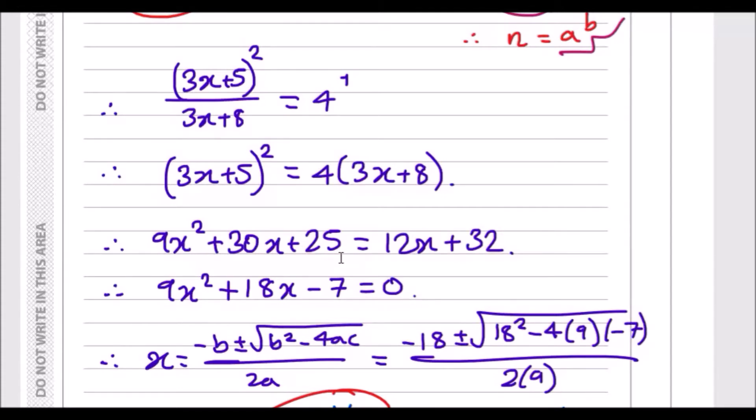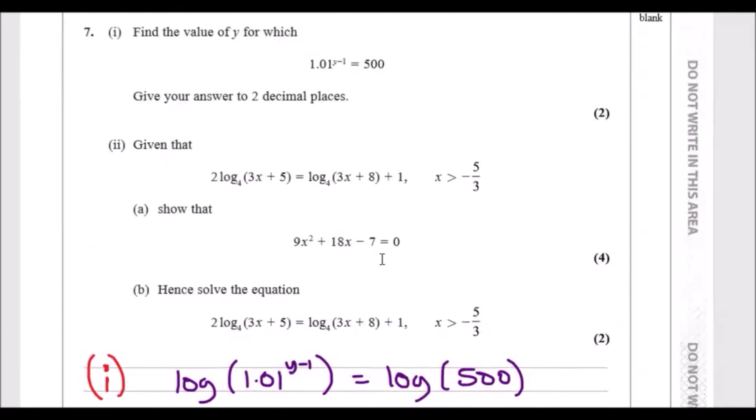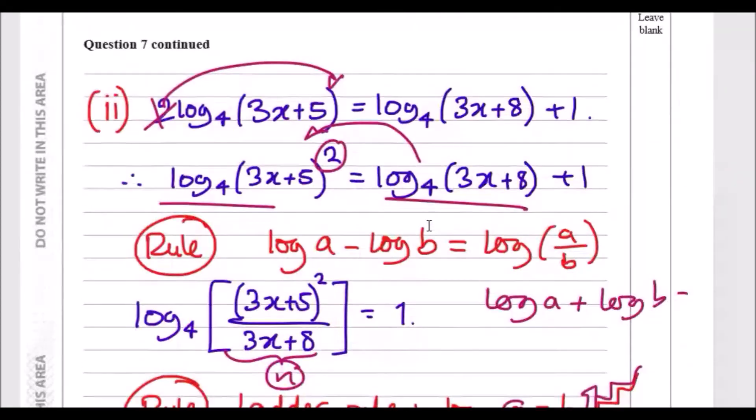This is easy to expand to get the right side. Now just subtract 12x and 32 to the left side, and you eventually get what they want, which is 9x² + 18x - 7 = 0. Double checking that, yes you should, so quite straightforward.